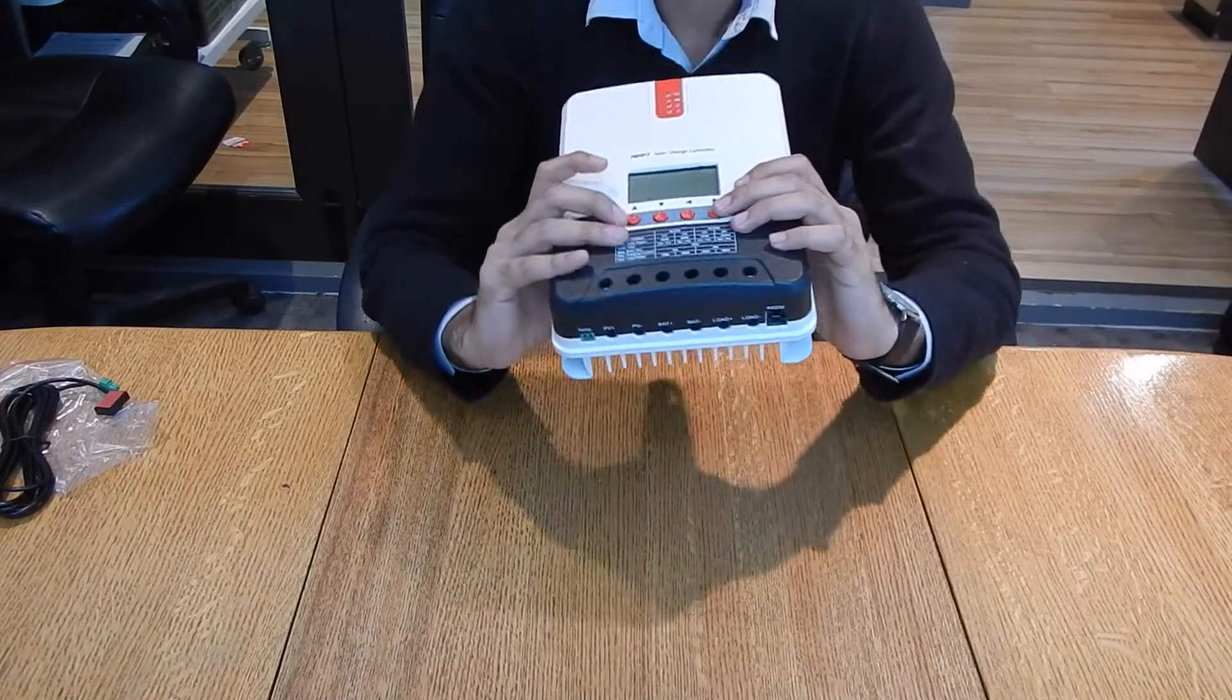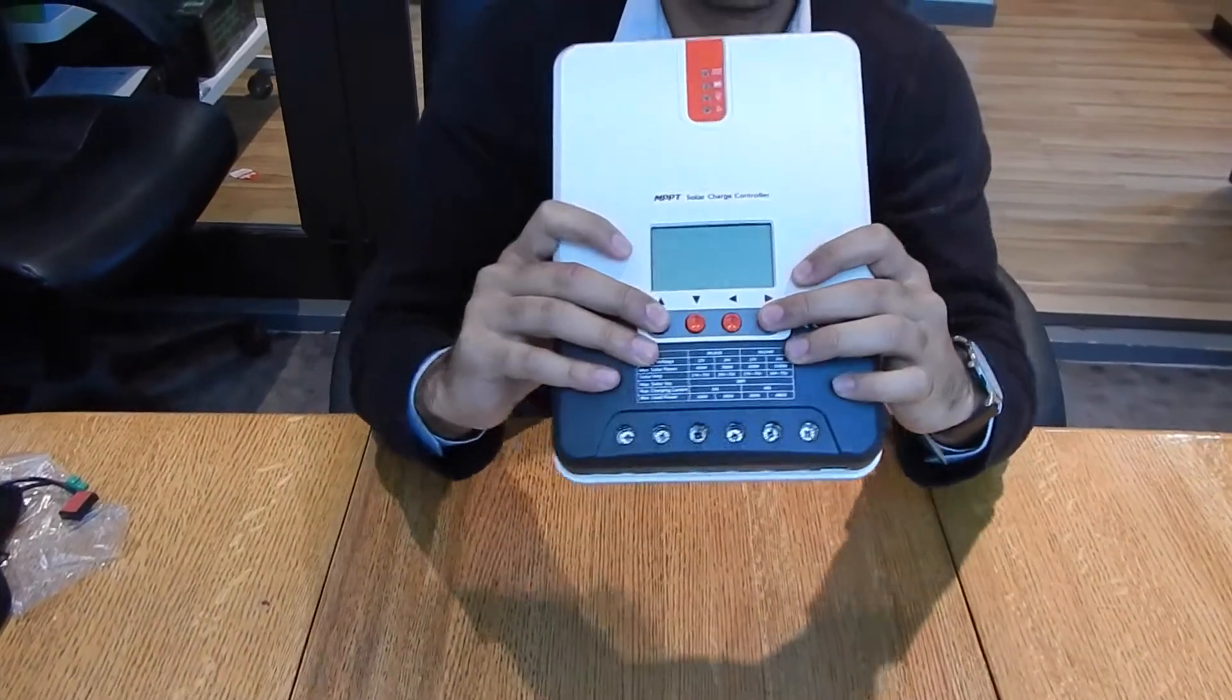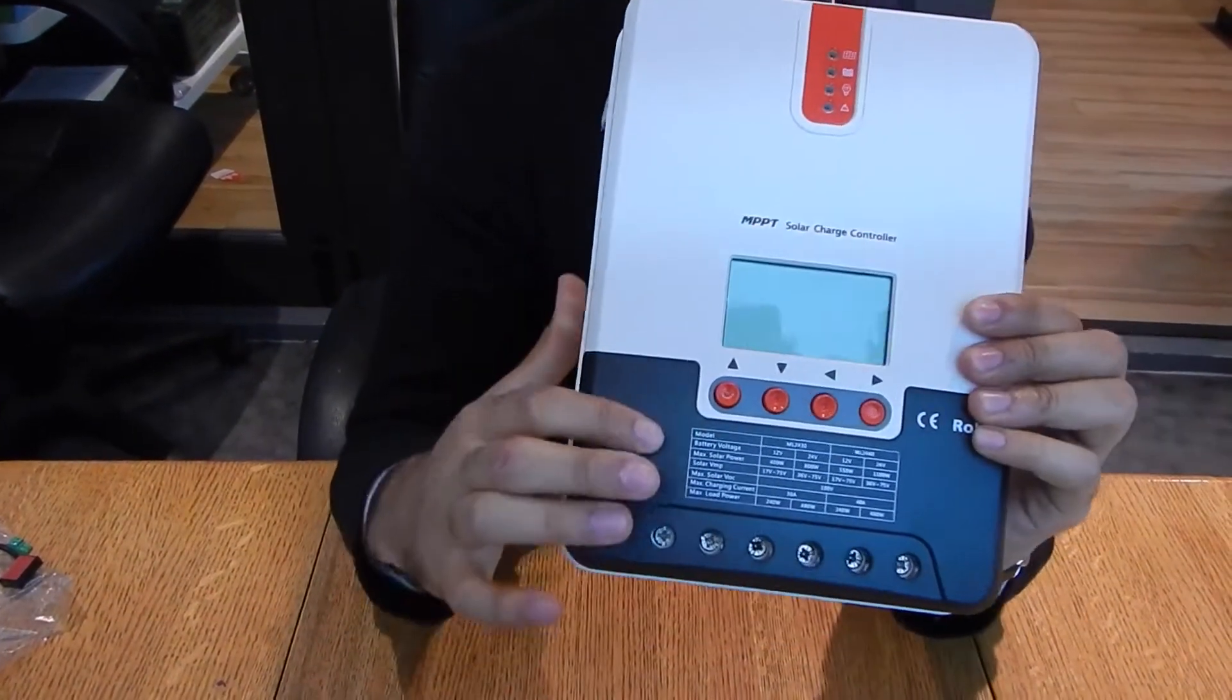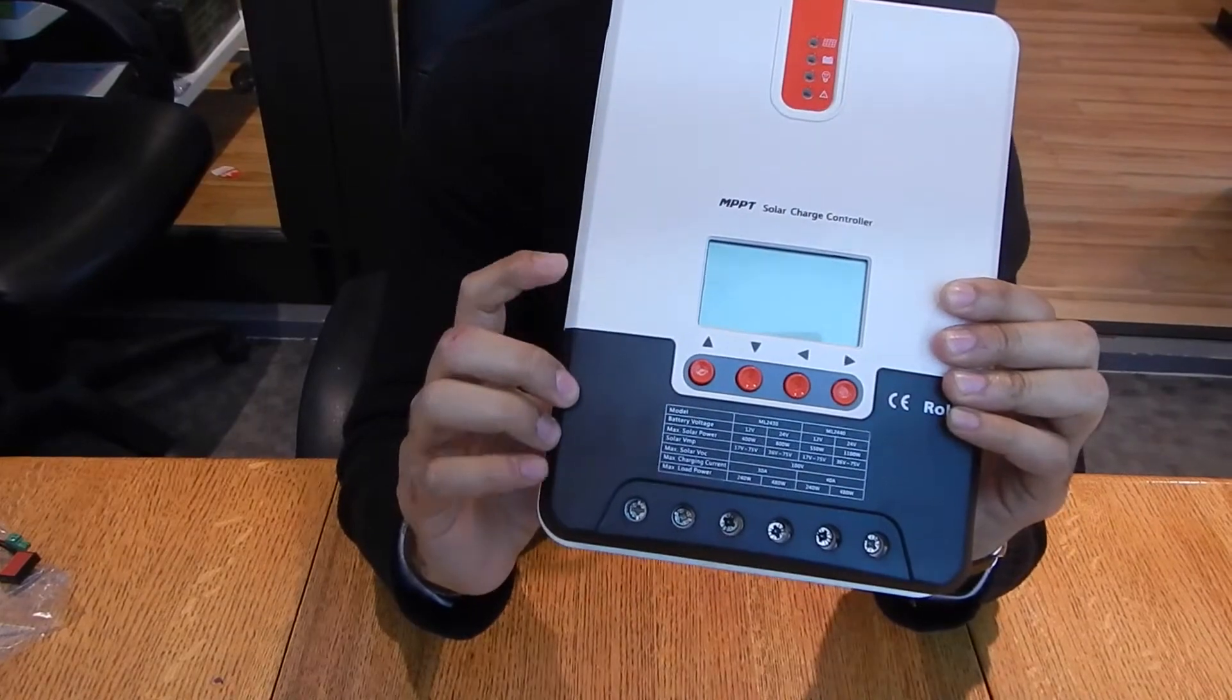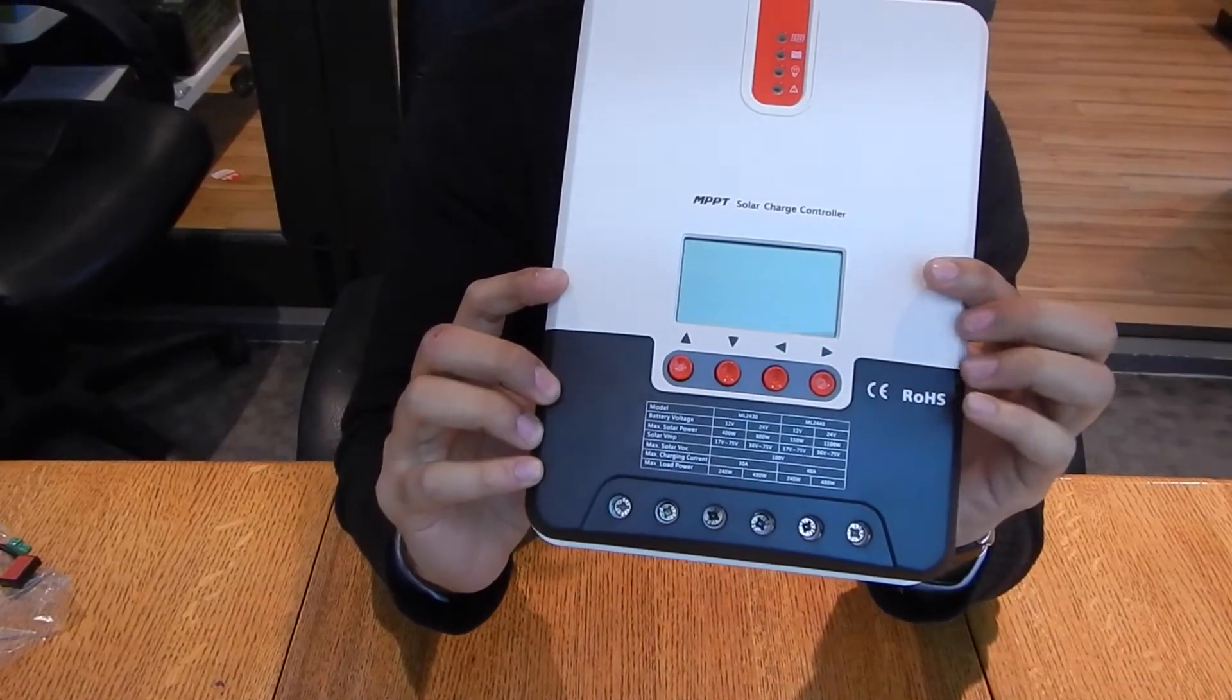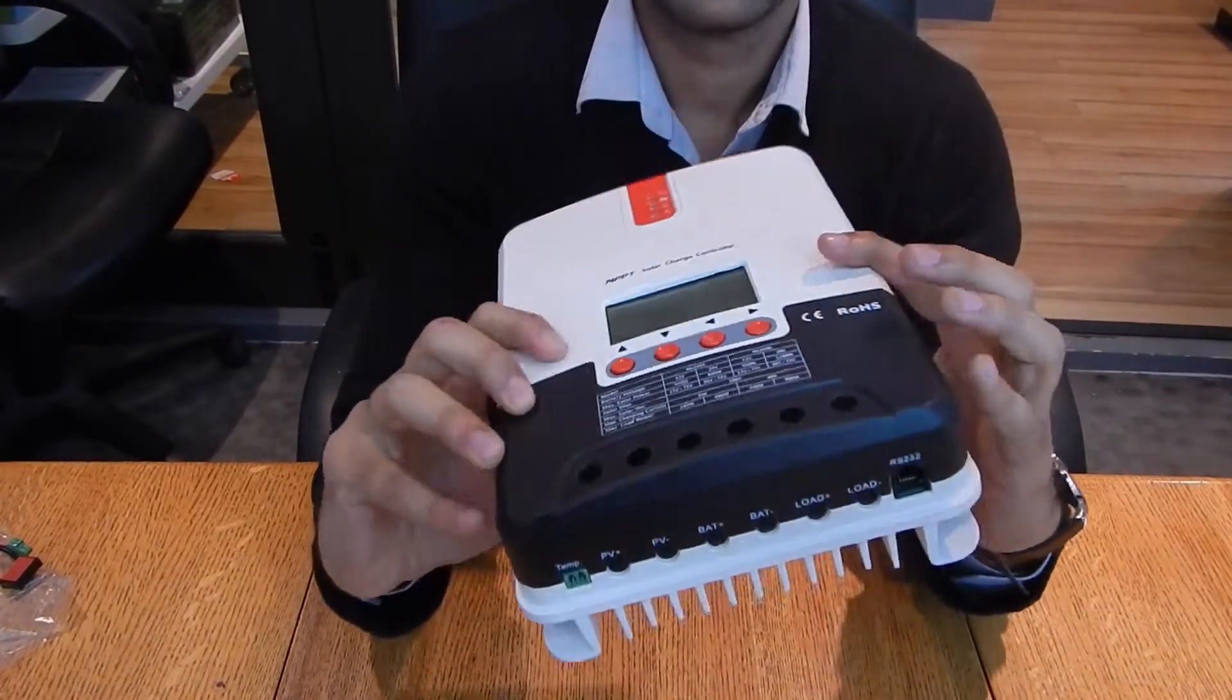It has a display that you can navigate through using the buttons here. On the table below, you can see how many solar panels you can attach to the charge controller.